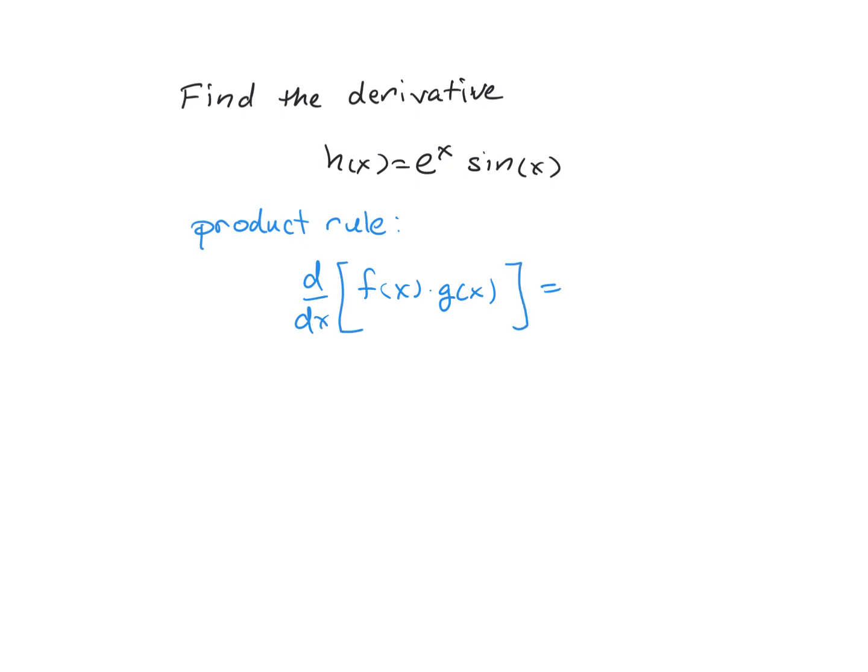And that rule is the derivative of the first times the second, plus the first times the derivative of the second.